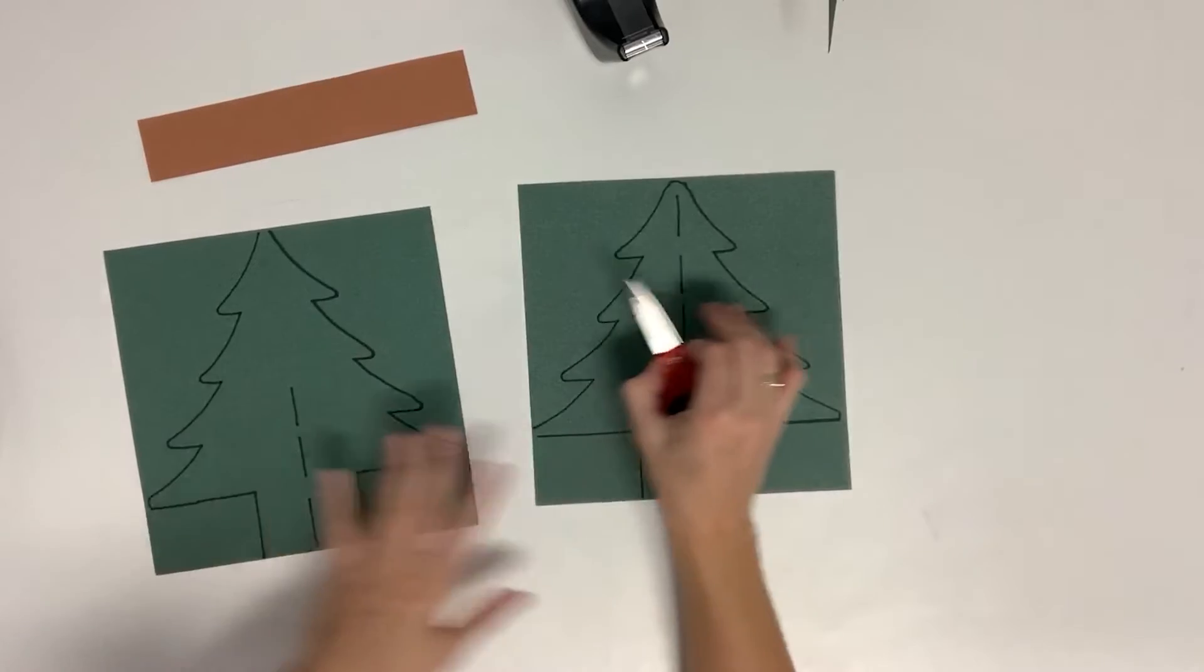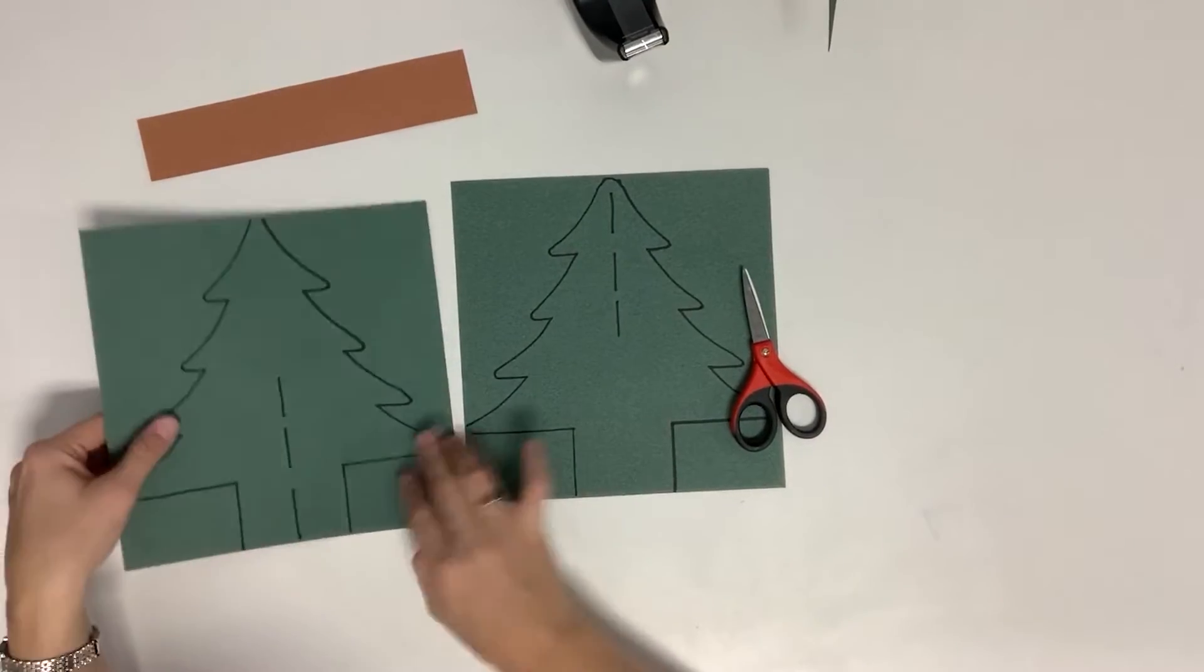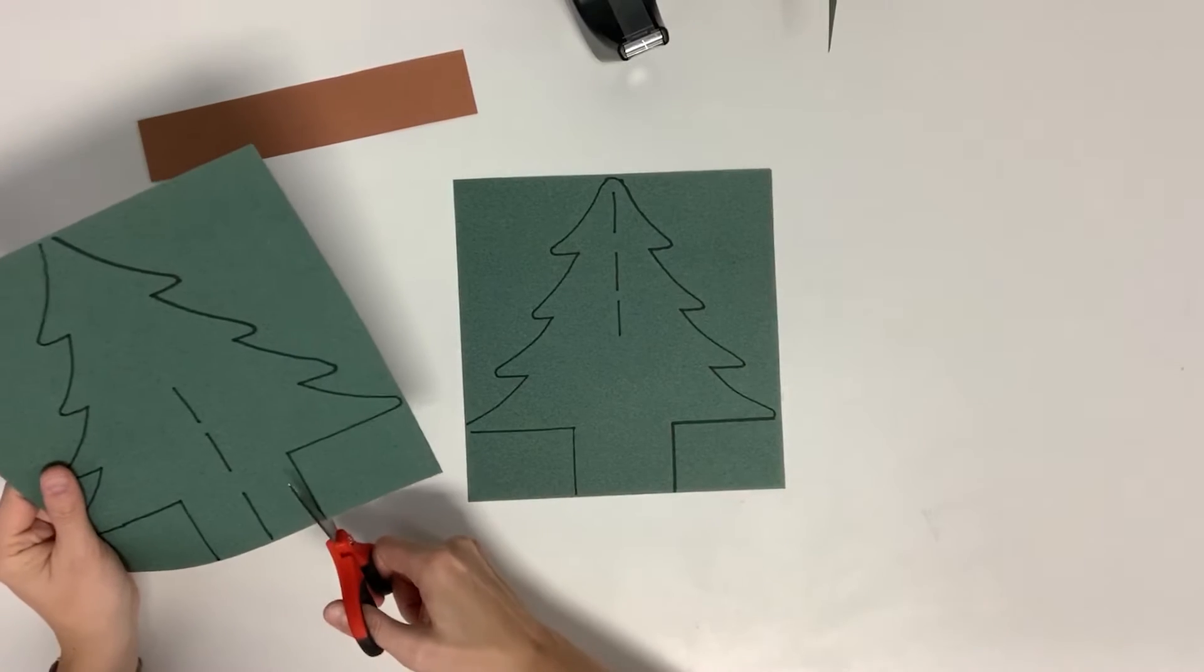So the first step is to take these two green trees and cut them out around the edges. We'll just take a minute to do that.